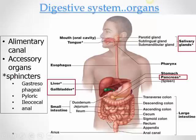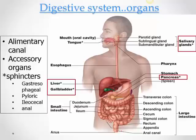An important feature of the tract is sphincters, similar to the cardiovascular system where you have one-way flow. You want substances to go from the oral cavity all the way down and out through the anal canal. Wherever there is a change from one part of the tract to another, there is a sphincter to ensure food passes forward and not backward.